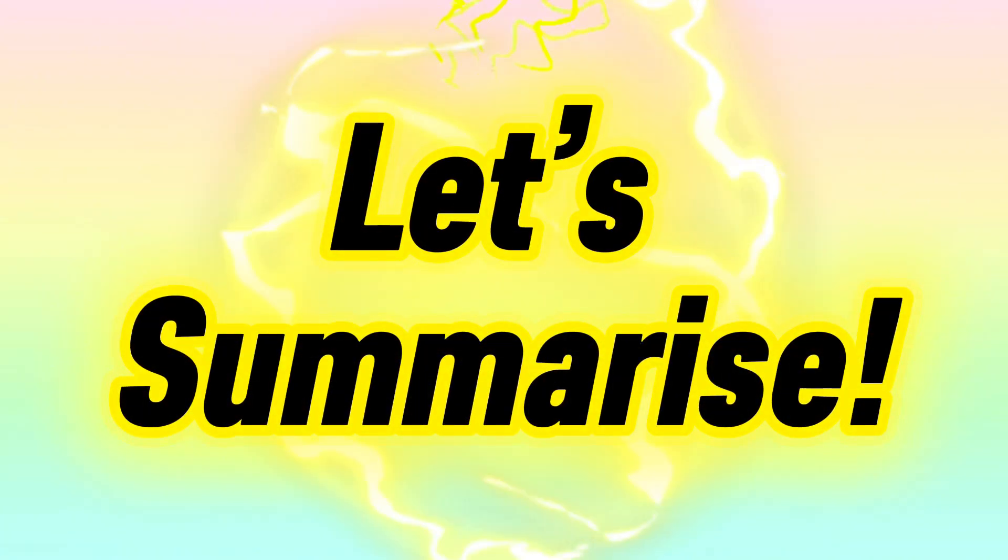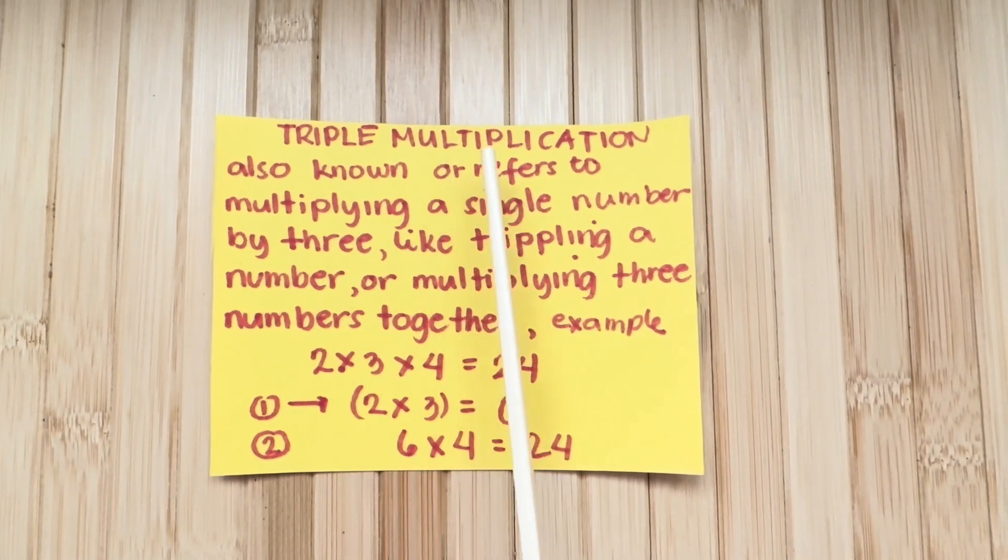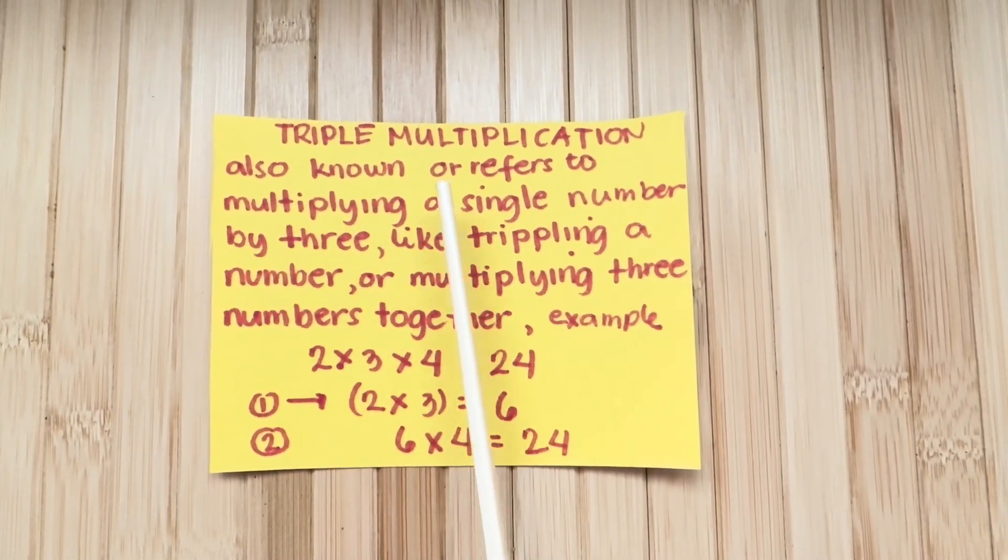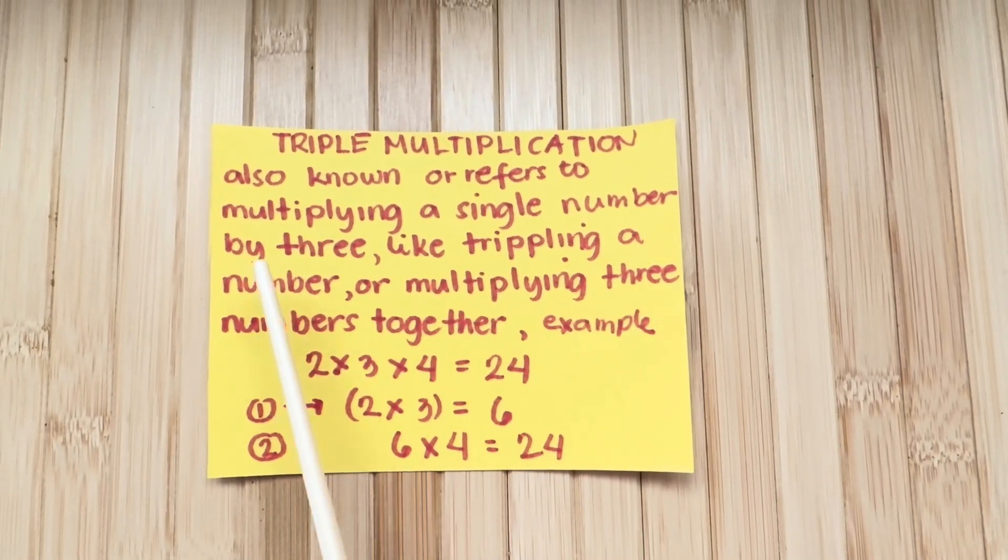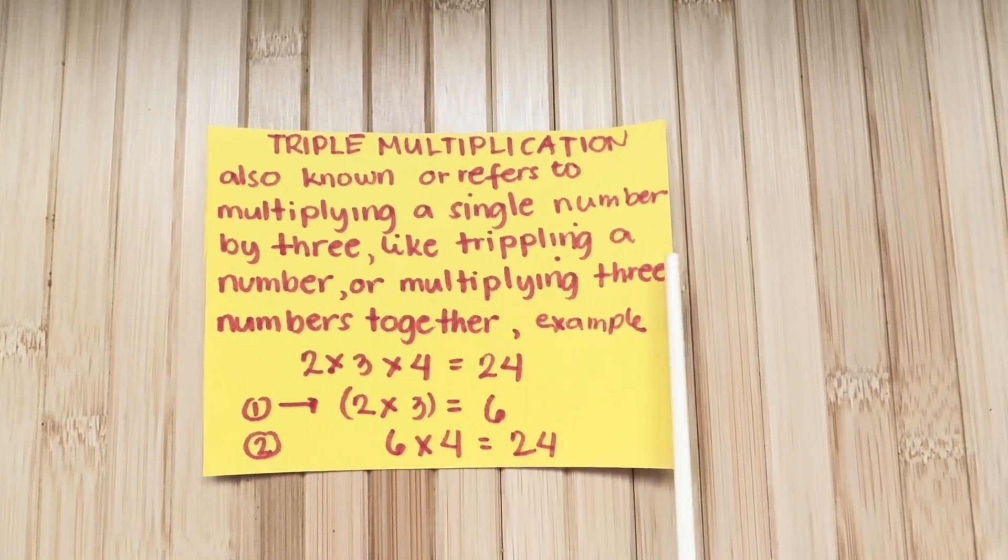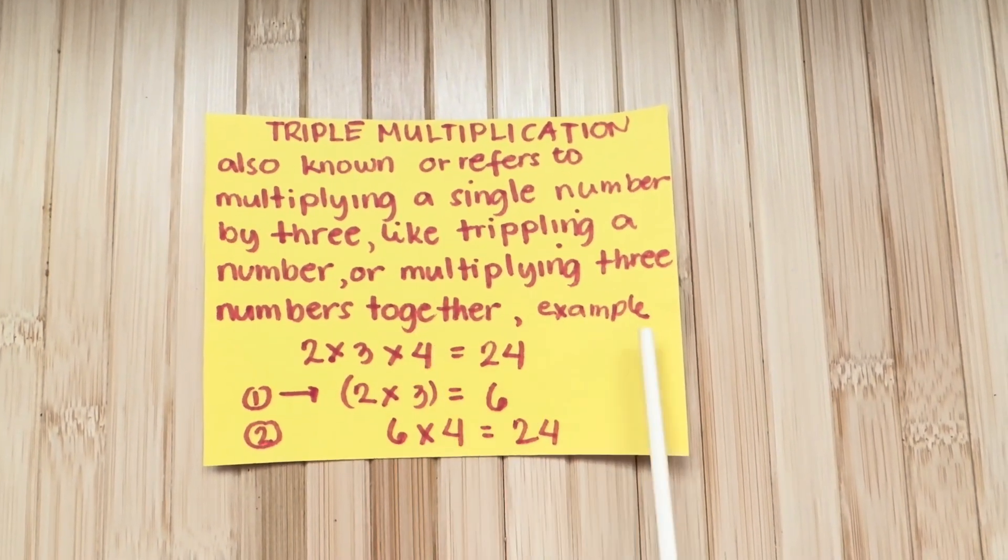Let's summarize. Triple multiplication, also known or refers to multiplying a single number by 3, like tripling a number, or multiplying 3 numbers together. Example.